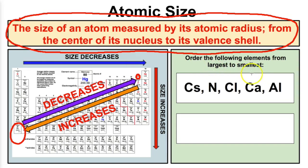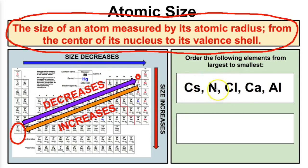Okay, let's take a look at an example. We need to order the following elements from largest to smallest: we have cesium, nitrogen, chlorine, calcium, and aluminum. Using the trend that we just talked about and using your periodic table, we need to order these atoms from largest to smallest.